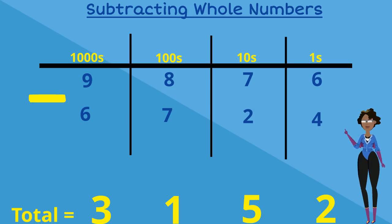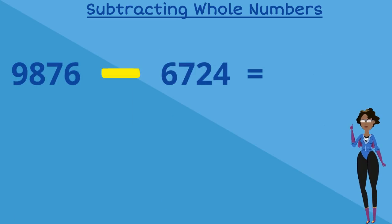Well done! So now we know that our answer for 9876 subtract 6724 is equal to 3152.